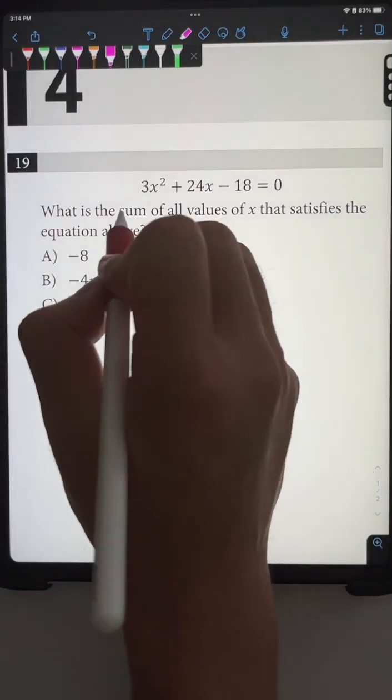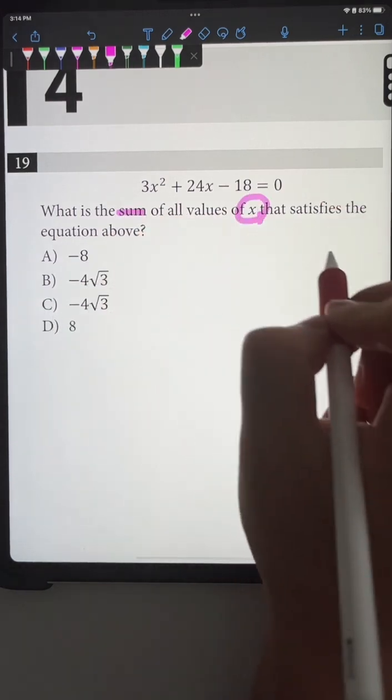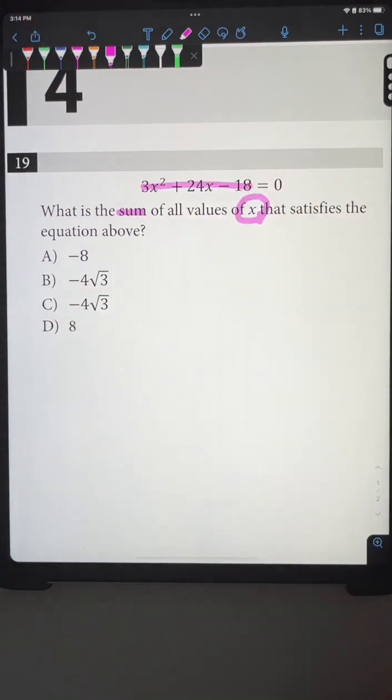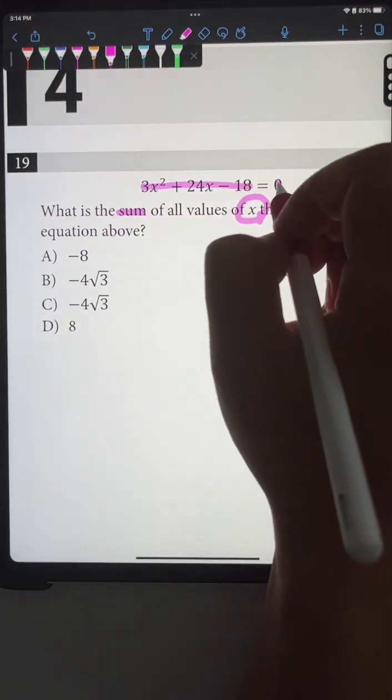The question says, what is the sum of all values of x that satisfy the equation above given right here? Within the equation, we're given a quadratic function and it is set equal to zero.